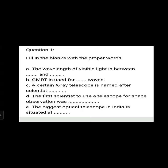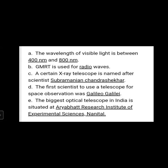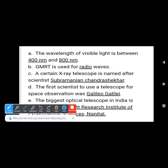The first question is: the wavelength of visible light is between dash and dash. The answer is 400 nanometers to 800 nanometers. You can take a screenshot of the answers. The wavelength of visible light is between 400 nanometers to 800 nanometers — this is the visible wavelength which we can see.